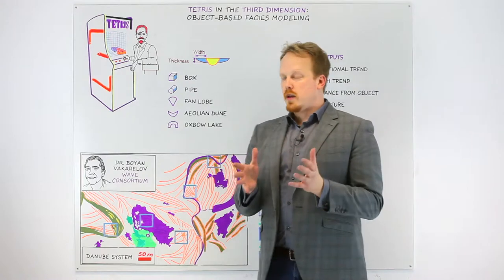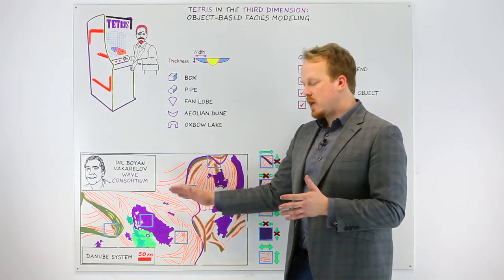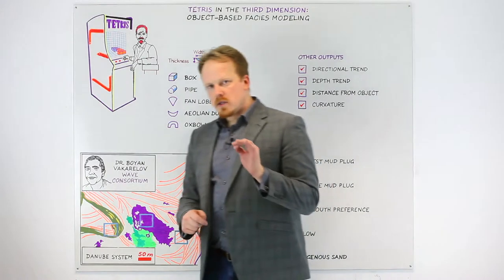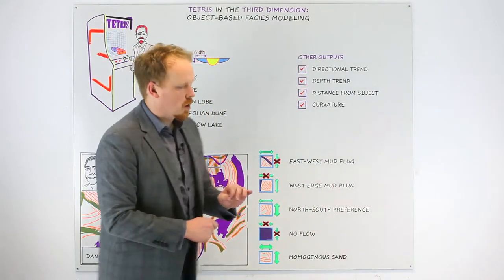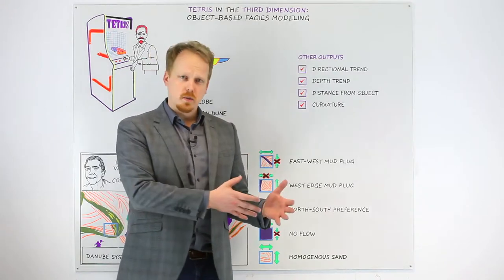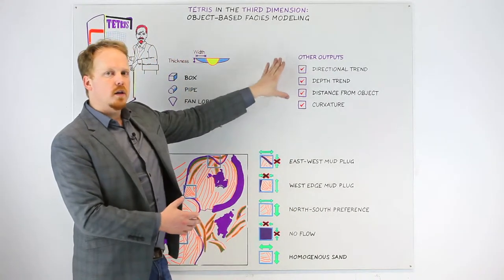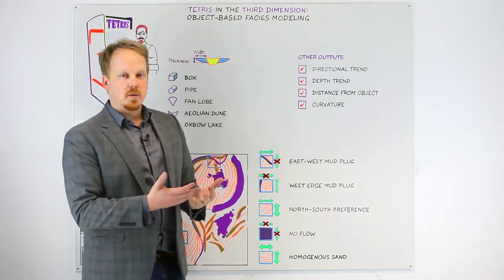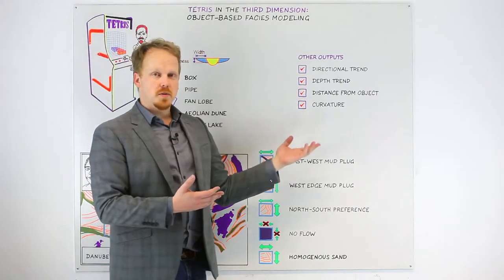So how could we then use a shape like this and still get that kind of behavior in the permeability vector? What we can do with object-based modeling that's somewhat unique to object methods as opposed to pixel-based methods is that you can preserve individual orientation attributes of each one of the objects.